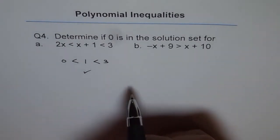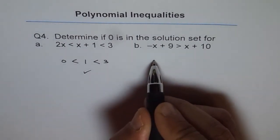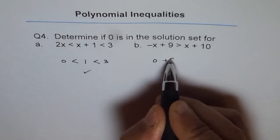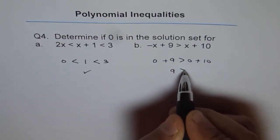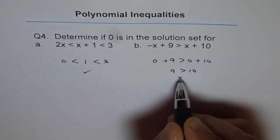If I plug it in here, then what do I get? I get 0 + 9 > 0 + 10. That is 9 > 10. Well, that is not correct.